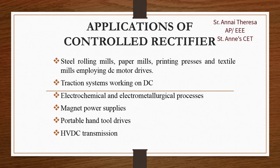With that introduction, let's look at the applications of controlled rectifiers. Steel rolling mills, paper mills, printing presses, and textile mills are all driven by DC motors. The input is AC, so it must be converted to DC by the controlled rectifier. Other applications include traction systems, electrochemical and electro-metallurgical processes, magnet power supplies, portable hand tool drives, and HVDC transmissions.